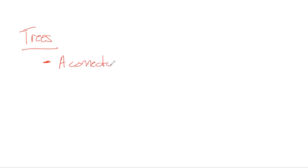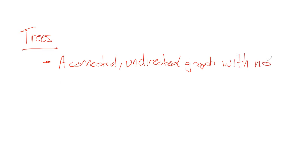Simply put, a tree is a connected, undirected graph with no circuits. An equivalent statement is that a tree is a graph with one unique simple path between any two nodes.